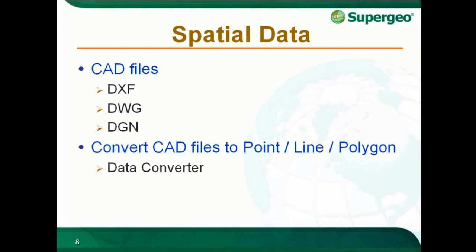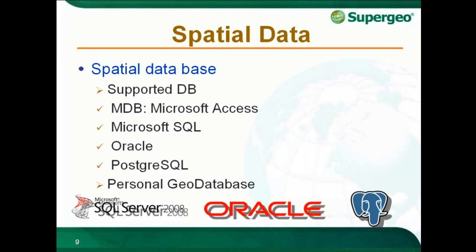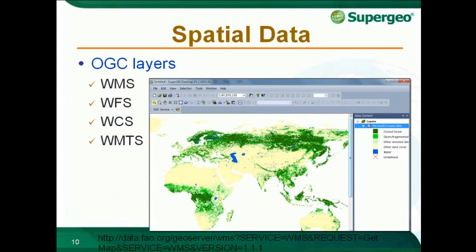SuperGIS Desktop can access different kinds of SQL Server, like Microsoft SQL Server, Oracle, and PostgreSQL. You can also create your own personal geodatabase using SuperGIS Desktop. OGC layers are standard web map services requested by internet clients. SuperGIS Desktop supports WMS, WFS, WCS, and WMTS data.